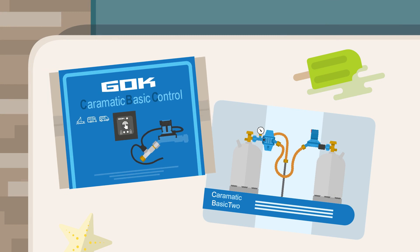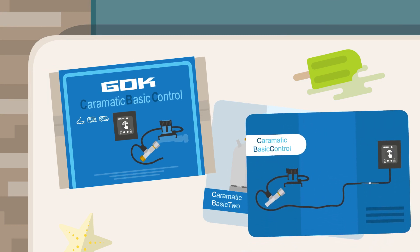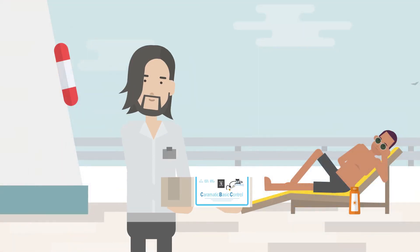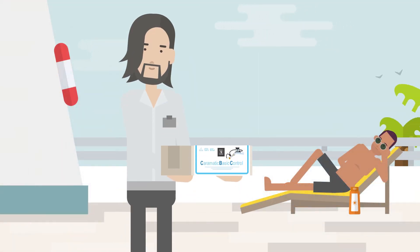The Karimatic Basic Control is a remote display for the two-cylinder system Karimatic Basic 2. Operators of LPG equipment in motorhomes, caravans or on boats can easily upgrade to allow simple control of the gas supply.